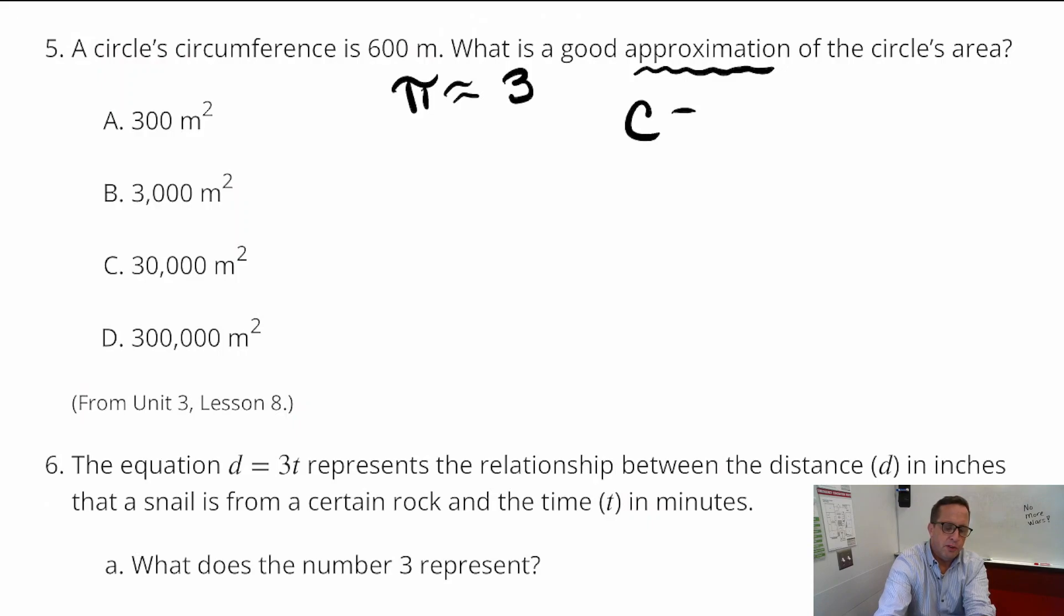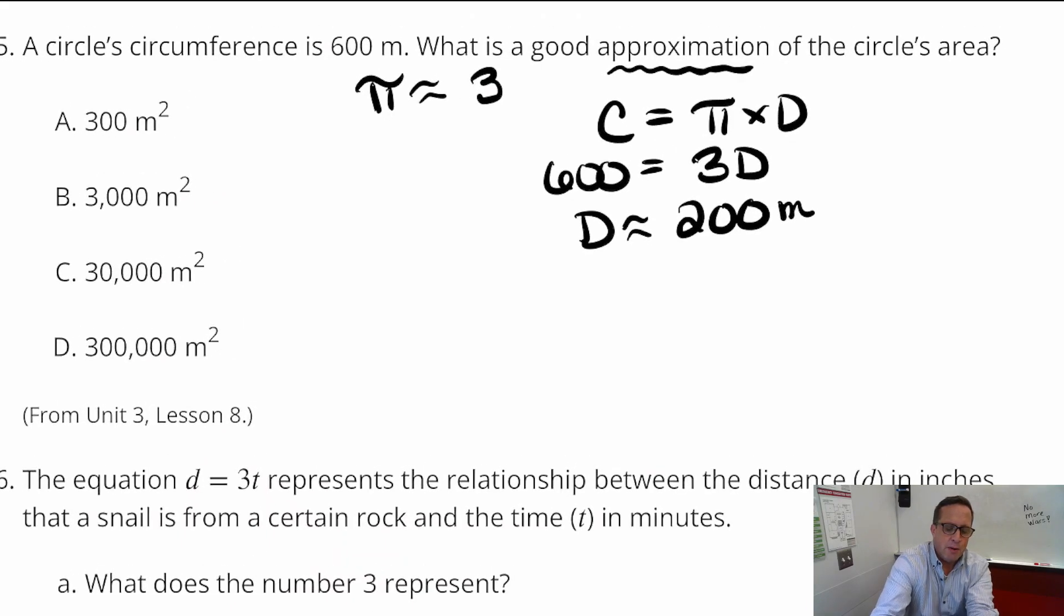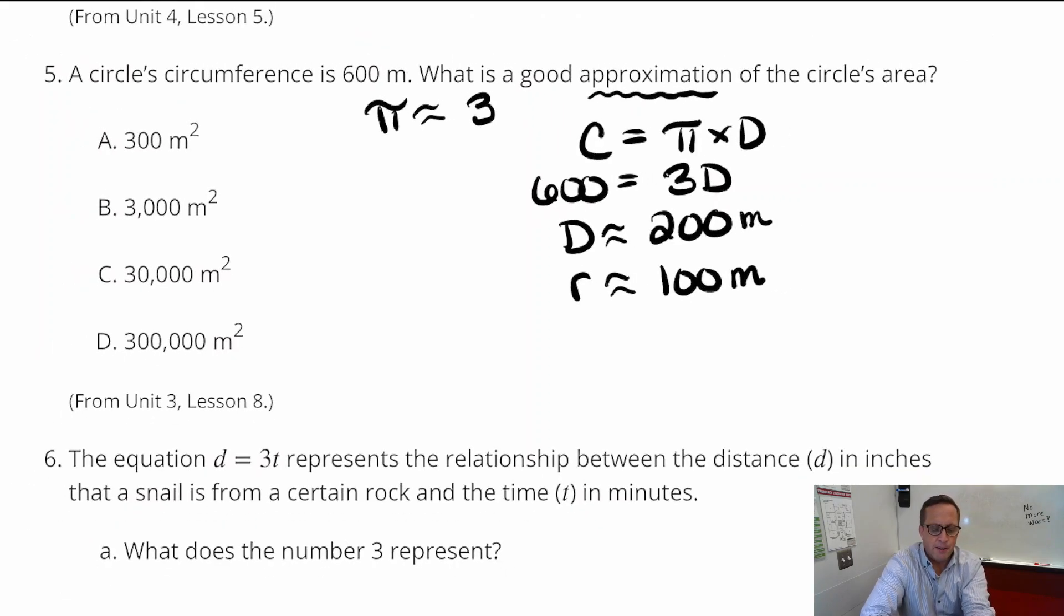Alright. Because remember, circumference equals pi times diameter. So, 600 equals 3 times D. So, 3 times what is 600? 3 times 100 is 300. 3 times 200 is going to be it. So, there you go. So, the diameter is approximately, I should say it's about 200 meters, because we're just estimating here. And so, if the diameter is 200, that means the radius is about 100. Because it's half of that.